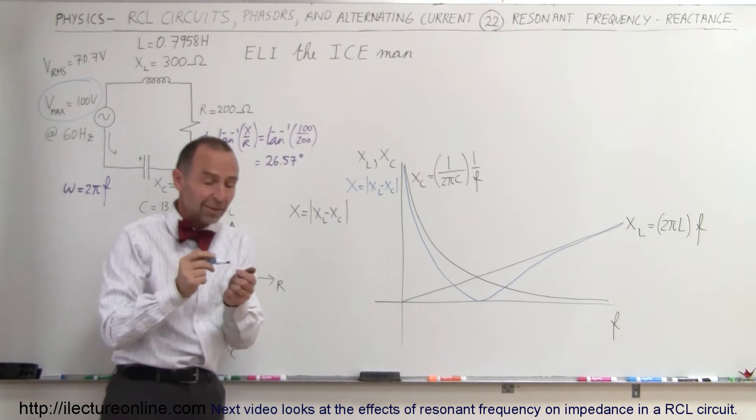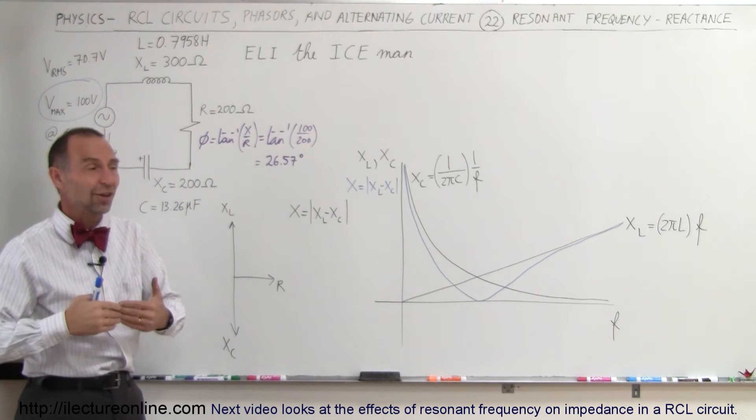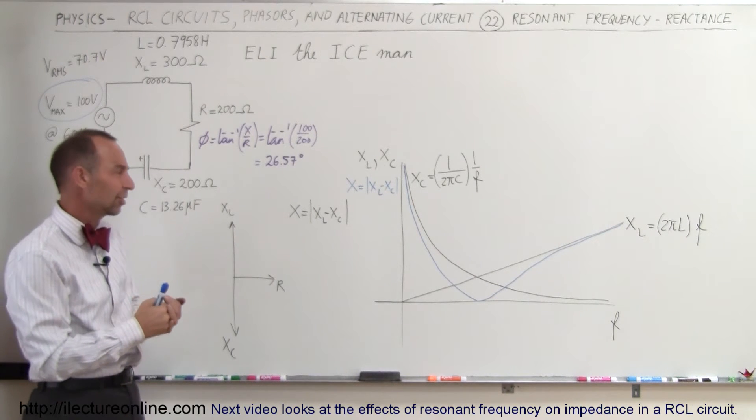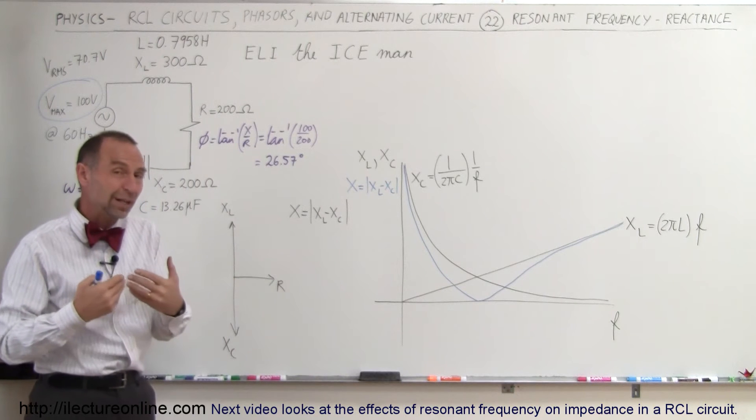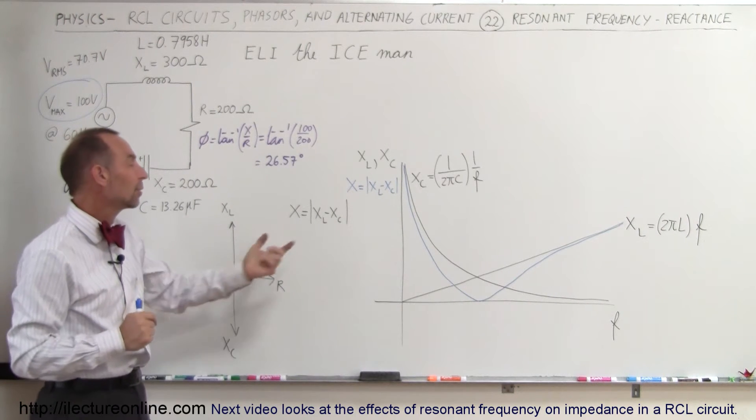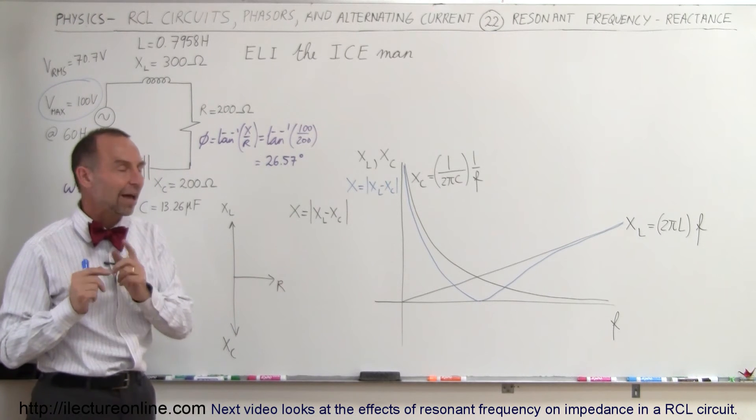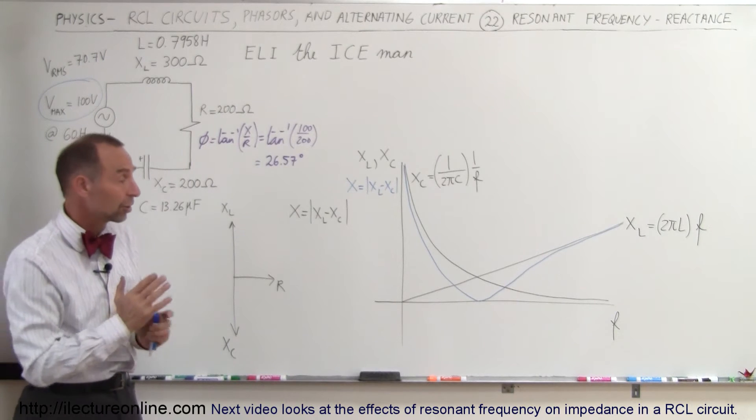Why do I use the absolute value? Because there's really no such thing as negative reactance or negative resistance. You can't have negative resistance in a circuit. So if X sub C is bigger than X sub L, you would otherwise end up with a negative value, which is not the case. You always will end up with a positive value, which means we have to take the absolute value of the difference. The blue line then represents the total reactance in the circuit.